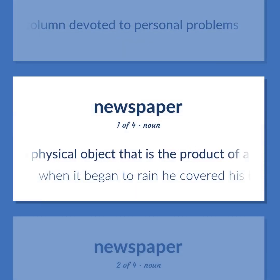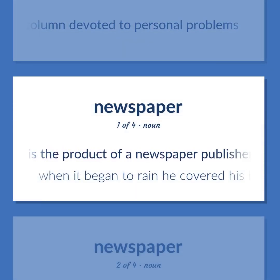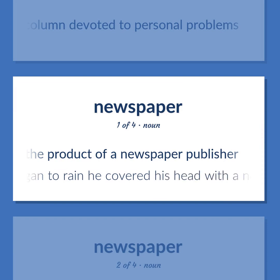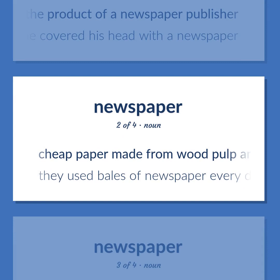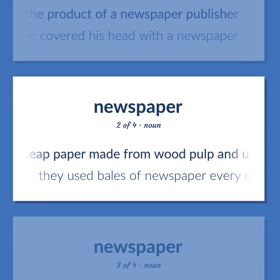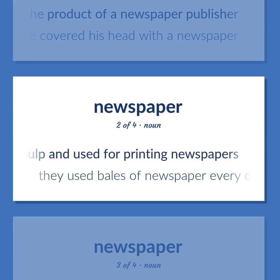Newspaper: the physical object that is the product of a newspaper publisher. When it began to rain he covered his head with a newspaper. Cheap paper made from wood pulp and used for printing newspapers. They used bales of newspaper every day.